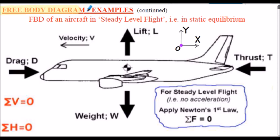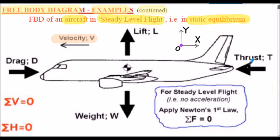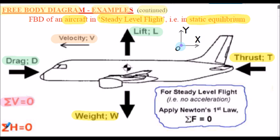Here's an aircraft in steady level flight — again considered static equilibrium because it's not accelerating. The free-body diagram shows all the forces acting on the body. In the horizontal direction we have thrust applied, which for steady level flight will be equal to the aerodynamic drag. We have the weight force of the aircraft balanced by the lift from the wings. Our inertial axes system is shown, and this would be a Newton's first law problem — summation of all forces in any direction equals zero.